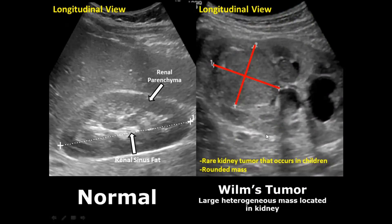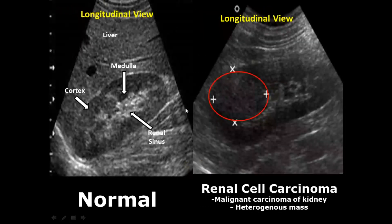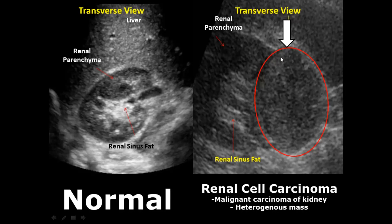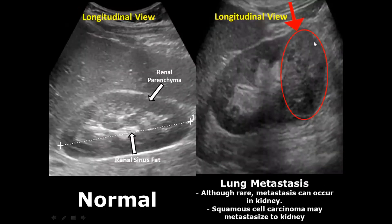Wilms tumor is a rare kidney tumor that occurs in children. We can see a large heterogeneous mass located in the upper pole of the kidney in the longitudinal view. Renal cell carcinoma is a malignant condition of the kidney — we can see a heterogeneous mass in the upper pole of the right kidney in both longitudinal and transverse views, occupying the cortical and medullary regions. Metastatic lesions usually appear as heterogeneous masses, and we can see another heterogeneous appearance in the lower pole of the kidney in the longitudinal view.